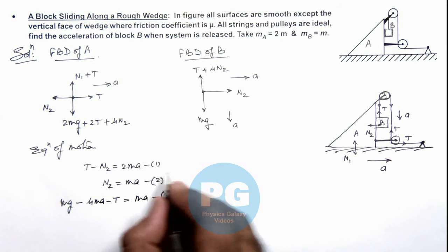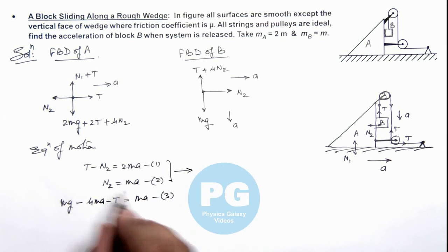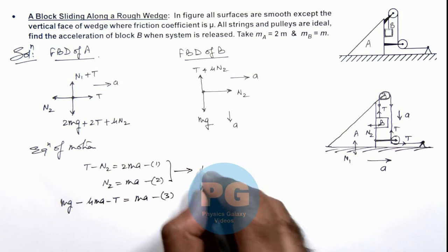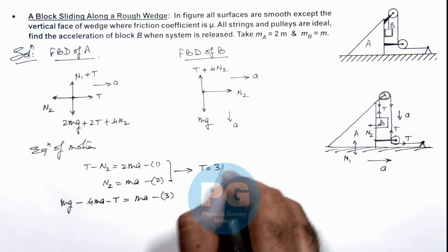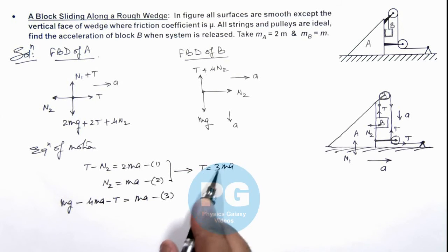From first and second equations we can deduce, if we substitute the value of N₂, we get the value of tension as 3ma. If we substitute the value of tension here, we get the value of acceleration.